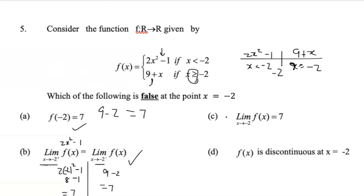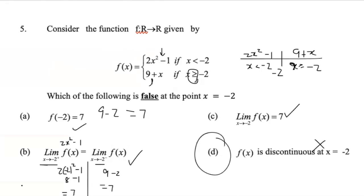Since the left and the right limits are both equal to 7, the limit as x tends to minus 2 is 7. The next statement says the function is discontinuous at x equals negative 2. This is false — f of minus 2 is 7, the limit exists and is also 7, so the function is actually continuous. So the answer is D.